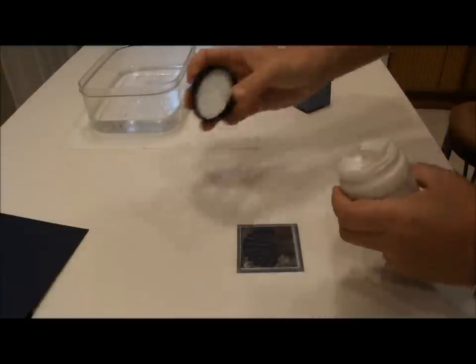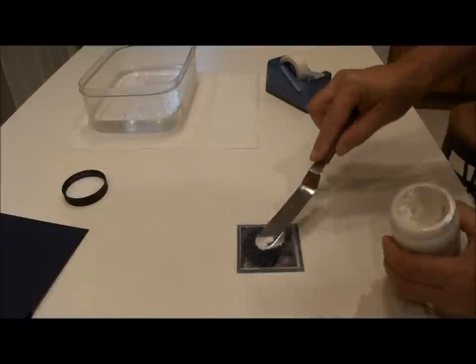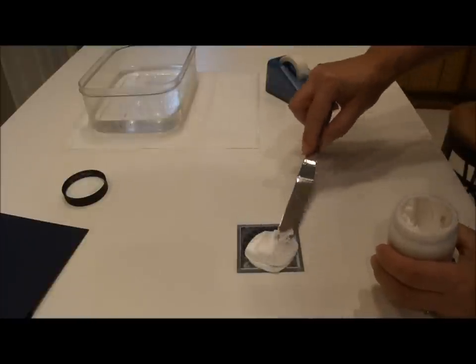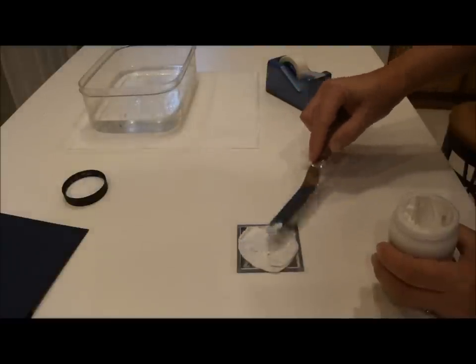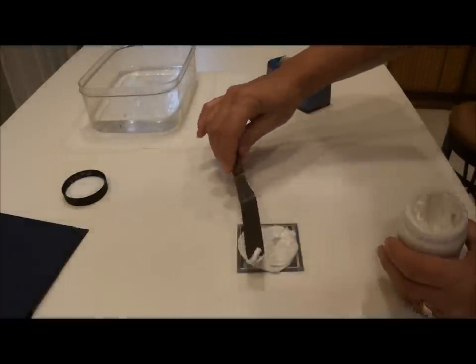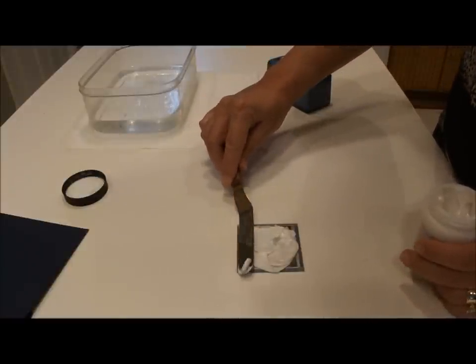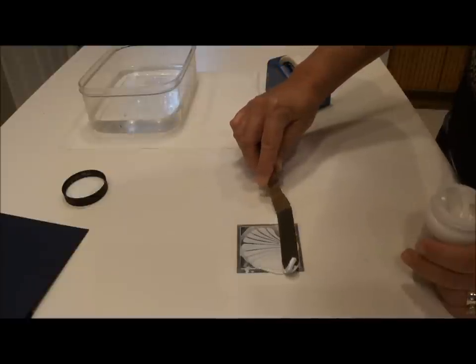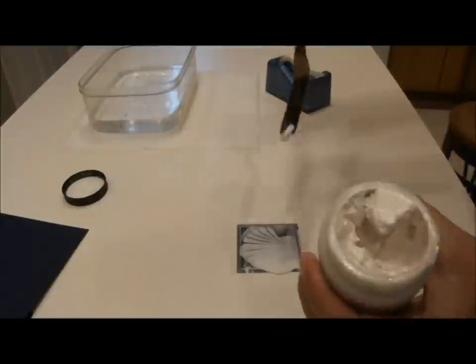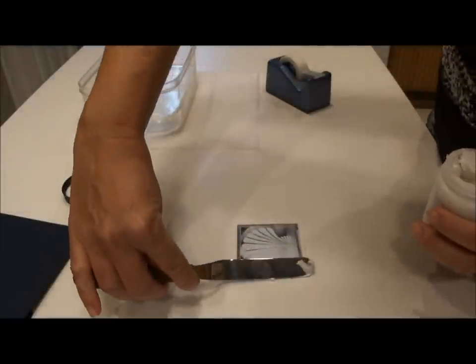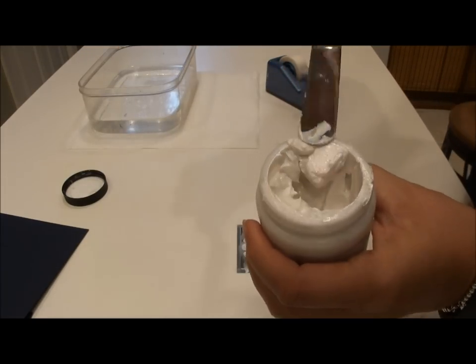So the first thing I'm going to do, I'm going to get a generous amount of pearl paste and spread it on the stencil. Then carefully hold your embossing knife at a 45 degree angle and you can scrape off the excess paste and then recycle back into the jar.